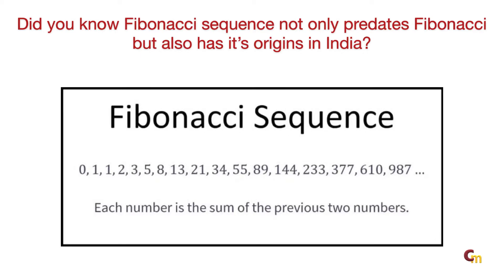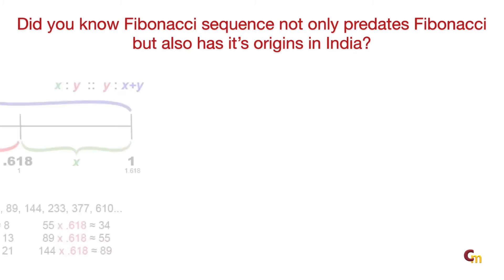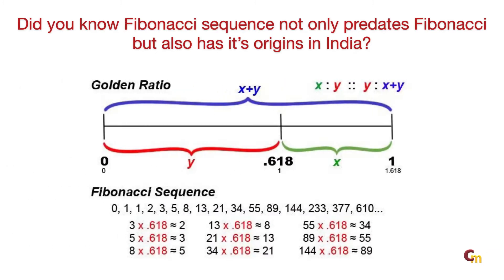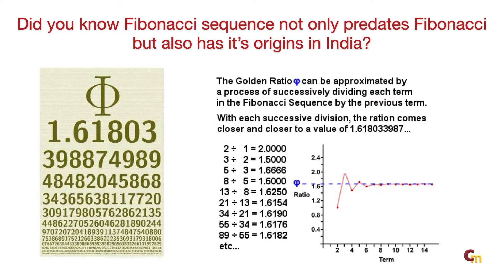Another important characteristic of this sequence is the fact that the ratio between any number and the previous one in the series tends towards a well-defined value, also called the golden ratio or golden section — phi — which is an irrational number with a value of 1.6180339 and so on.